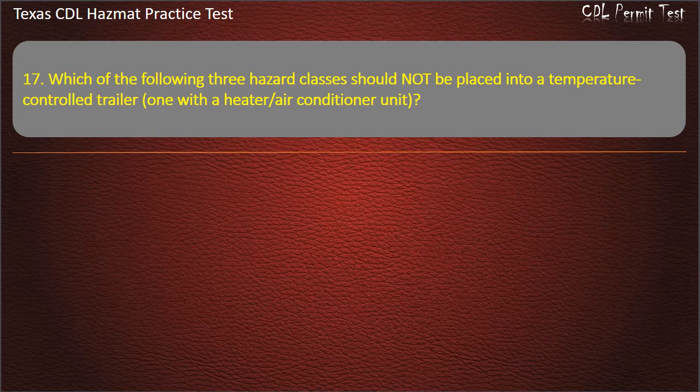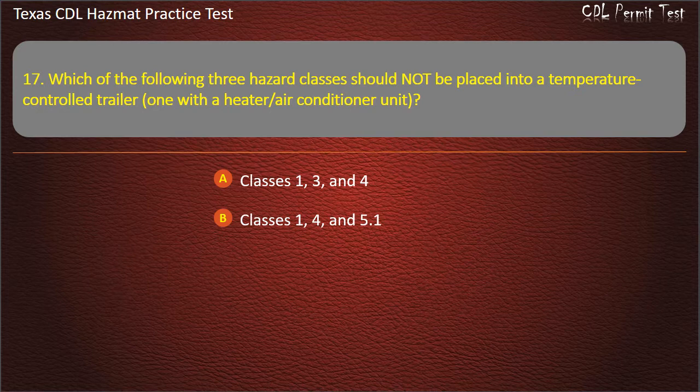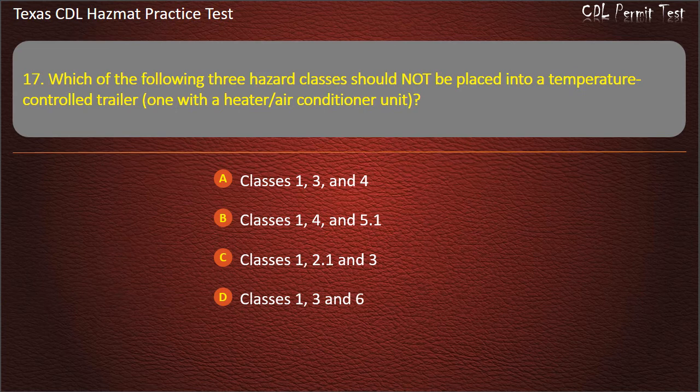Question 17: Which of the following 3 hazard classes should not be placed into a temperature control trailer, one with a heater or air conditioner unit? Classes 1, 3, and 4. Classes 1, 4, and 5.1. Classes 1, 2.1, and 3. Classes 1, 3, and 6. Answer: Classes 1, 2.1, and 3.